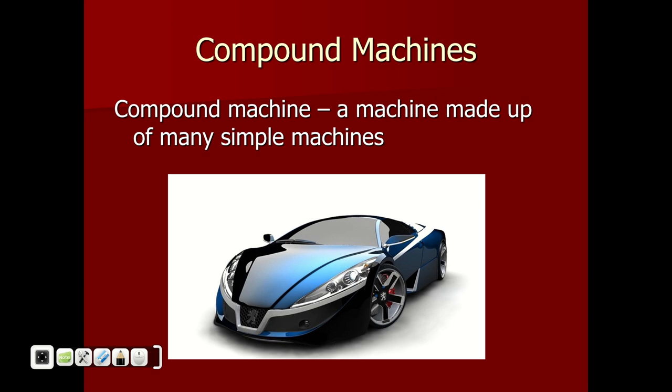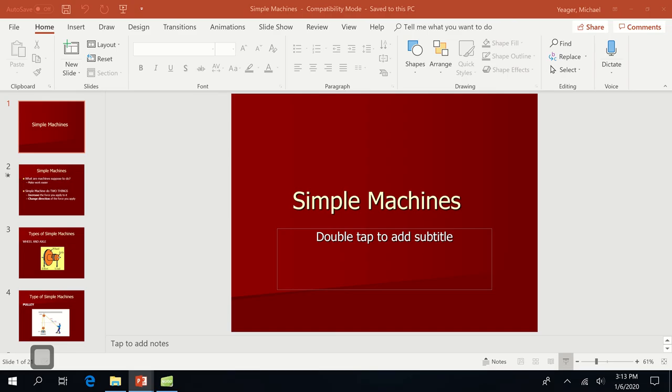The last thing to note is compound machines. A compound machine is where you put multiple simple machines together. A car, for example, has multiple simple machines in it — pulleys, wheels and axles, levers, and more. That's how all machines are. When you put multiple simple machines together, it's called a compound machine. We just need to know the term. Thank you.